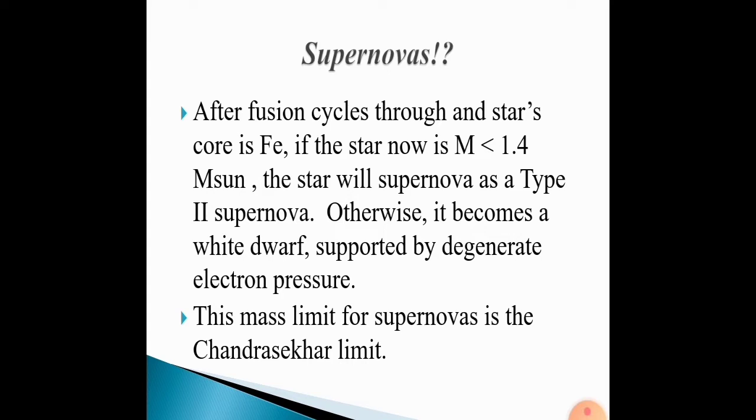After fusion cycle through and star's core is iron, if the star's mass is less than 1.4 solar masses, the star will supernova as a type 2 supernova. Otherwise it becomes a white dwarf supported by degenerate electron pressure. This mass limit for supernovas is the Chandrasekhar limit.